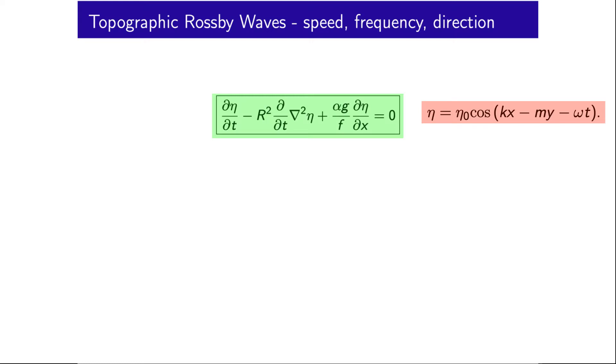We can then rearrange for ω to get the dispersion relation for topographic Rossby waves as ω equals our slope term α times gravity on f times k on 1 plus r squared outside of k squared plus m squared.